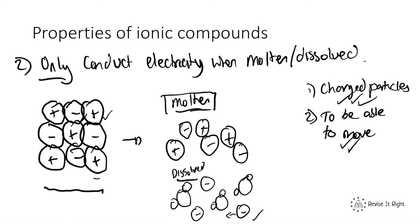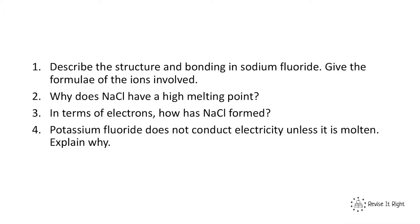So we need to be aware that when ionic compounds are in their solid form, they cannot conduct electricity. However, when they are molten or dissolved in water, they can conduct electricity — and that is a property of all giant ionic compounds. To summarise: property one is high melting and boiling points; property two is that they conduct electricity when molten or dissolved. Now have a go at answering these questions to check your understanding — pause the video now.